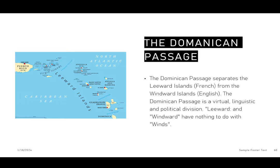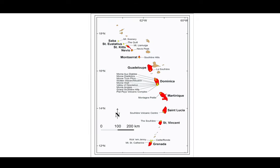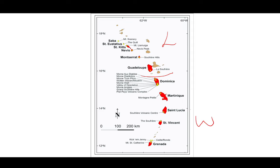The Dominican Passage is important because it separates the Leeward Islands from the Windward Islands. The Leeward Islands tend to be more French-influenced while the Windward Islands tend to be more English. This division has nothing to do with winds linguistically — it refers to how the islands are separated through the Dominican Passage, which passes above Dominica, separating Leeward from Windward.